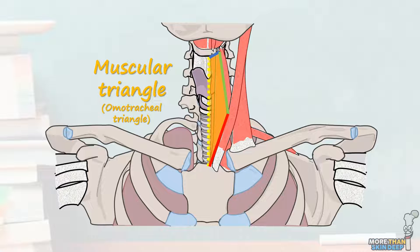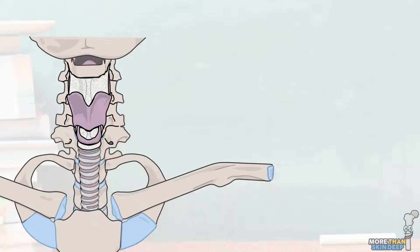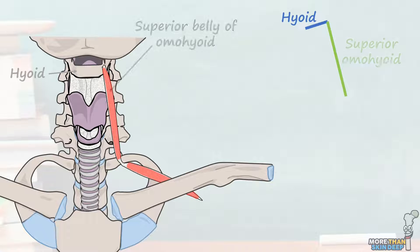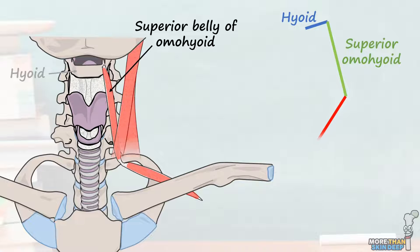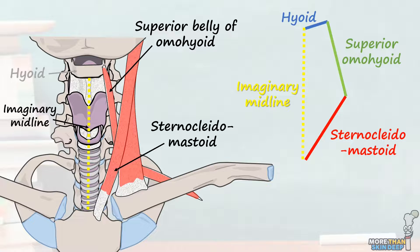The superior border of the muscular triangle is the hyoid bone. The superior lateral border is the superior belly of the omohyoid muscle. The inferior lateral border is the sternocleidomastoid muscle, and the medial border is an imaginary line running down the midline of the neck.